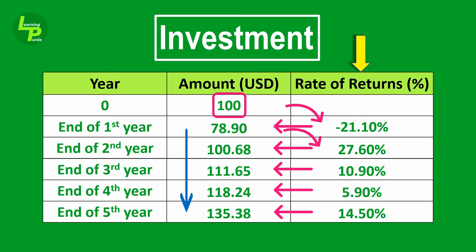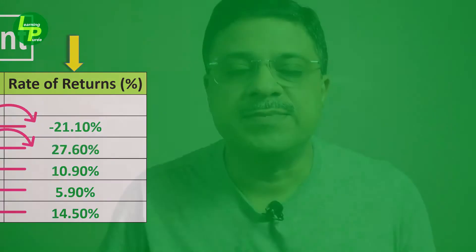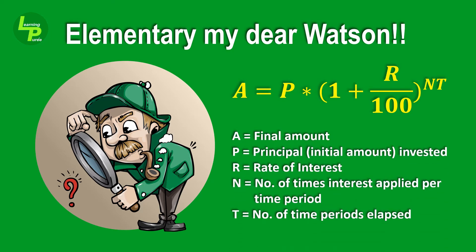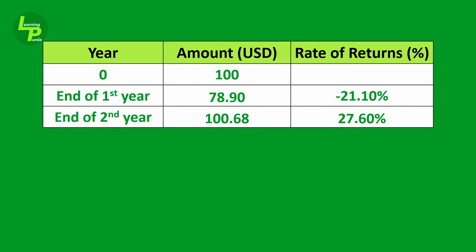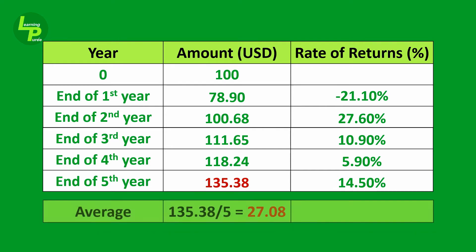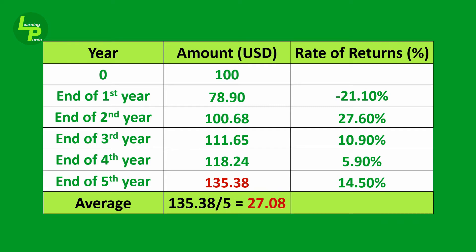The last column depicts the percentage rate of returns for subsequent years. These figures came from an elementary understanding of compound interest calculation we have learnt in the 7th grade. Let us examine this table. If we take the arithmetic mean for $135.38 across 5 years, it comes to $27.08. In other words, theoretically, it means that you have received on average $27.08 every year. This figure gives the average amount received per year, and not the average growth rate of your investment.